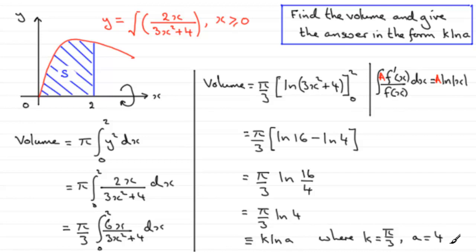But don't worry about this, because we didn't necessarily have to state the values of k and a. Okay, so there's your answer, pi upon 3, natural log of 4.